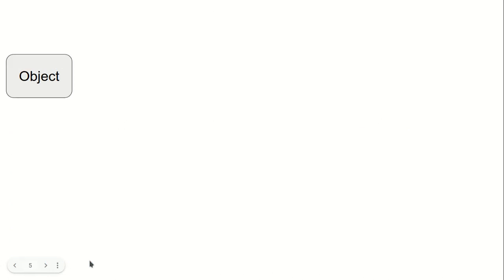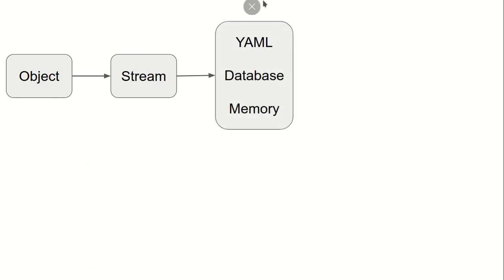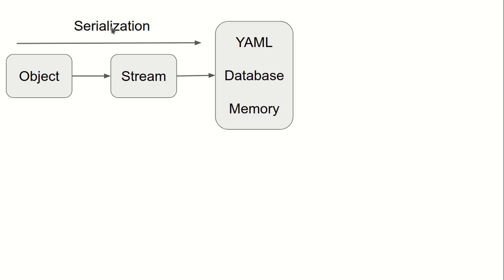Here is an object which is transferred to a stream. After that, the data is transferred to a YAML file, database, or memory inside the application. The stream that contains the object data is transferred to the YAML file, the database, or the memory. This is called serialization — from object to stream, and from stream to the application which contains the YAML file, database, or memory.